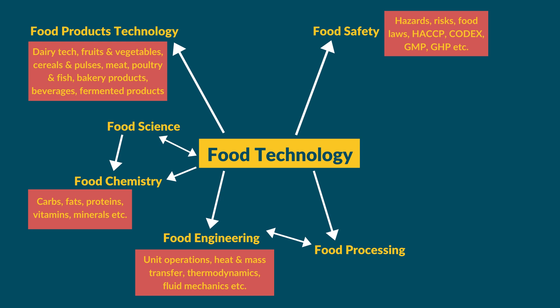Another interesting branch connected directly with both food safety and food technology is food microbiology. Many students are scared of the word microbiology, worrying they haven't studied biology. Food microbiology is relatively easier when compared to class 11th or 12th biology, and it is also interesting because it connects directly with food safety. There are many pathogens — bacteria, mold, fungi, and viruses — that can enter or develop in food and enhance the risk of disease. That is what we tackle under food safety and food microbiology.